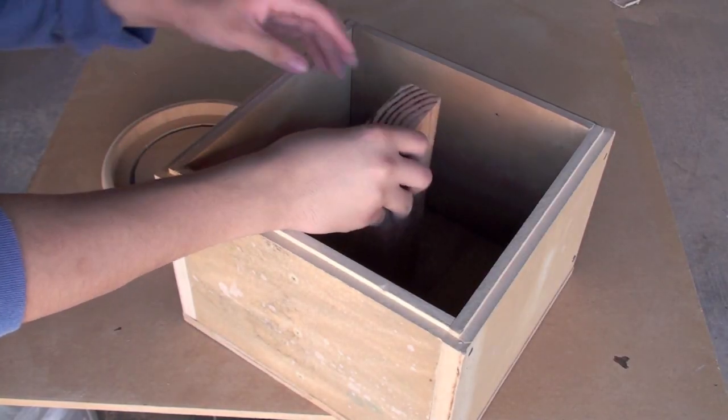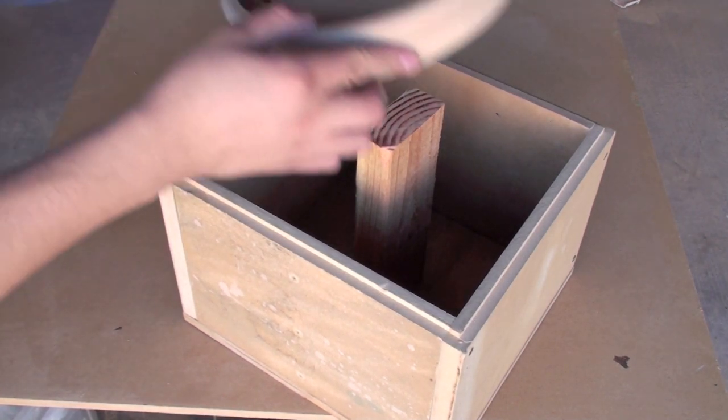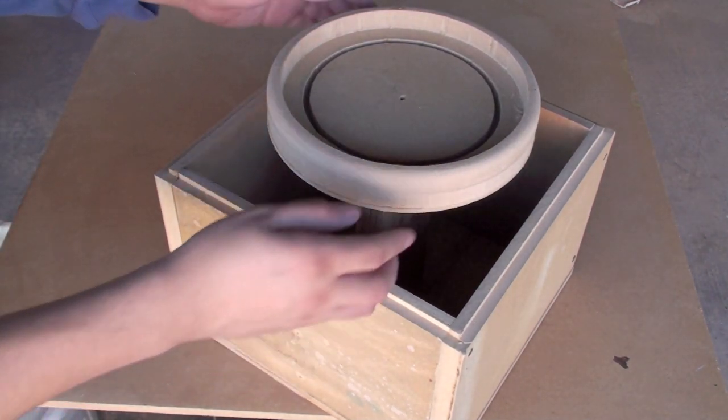Now cut a piece of 2x4 that is slightly higher than the box and place it in the center. Make sure the ring is even on all sides before moving to the next step.